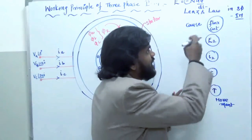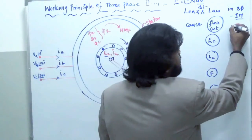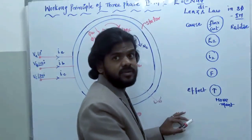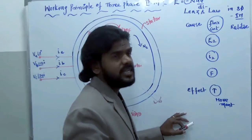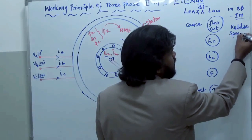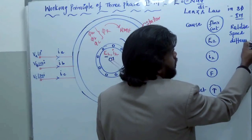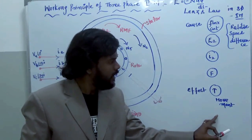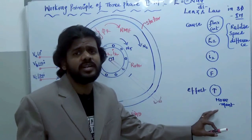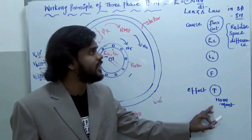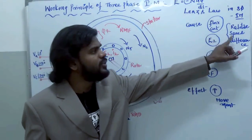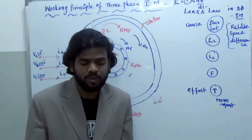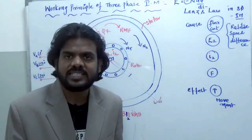So the reason behind EMF induced is flux cut. And what is the reason for this flux cut? The reason for the flux cut is a relative speed difference. So the effect is movement, and the first cause for this effect is flux cut, which is due to the relative speed difference. This induction motor in its working has to satisfy Lenz's law.